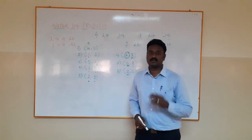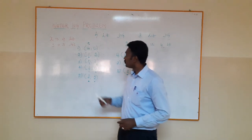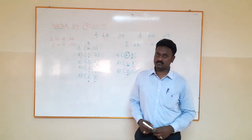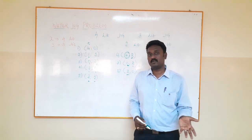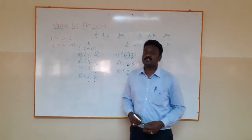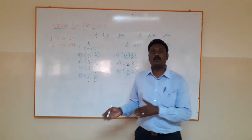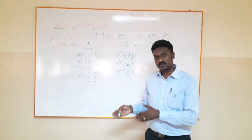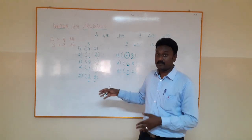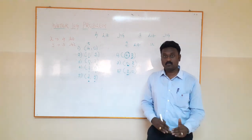Now in the four-litre jug there is one litre of water remaining. I pour that one litre into the ground, so the four-litre jug becomes empty, but I still have three litres in the three-litre jug — state (0, 3). Now I pour all the water from the three-litre jug into the four-litre jug, so the four-litre jug holds three litres and the three-litre jug is empty — state (3, 0).